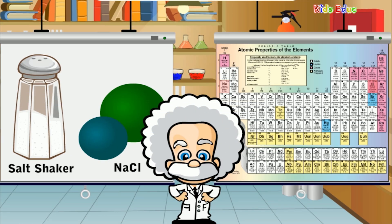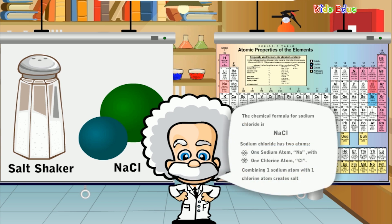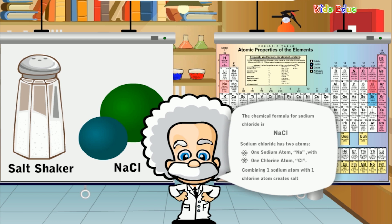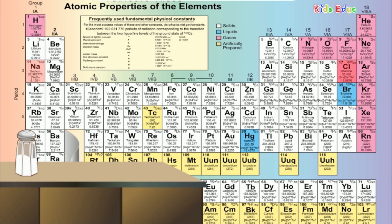What is sodium chloride? In 1807, Sir Humphry Davy discovered sodium chloride. The chemical formula for sodium chloride is NaCl. Sodium chloride has two atoms: one sodium atom (Na) with one chlorine atom (Cl). We put salt on the food we eat. We know the chemical formula for sodium chloride is NaCl — that is, one sodium atom with one chlorine atom.